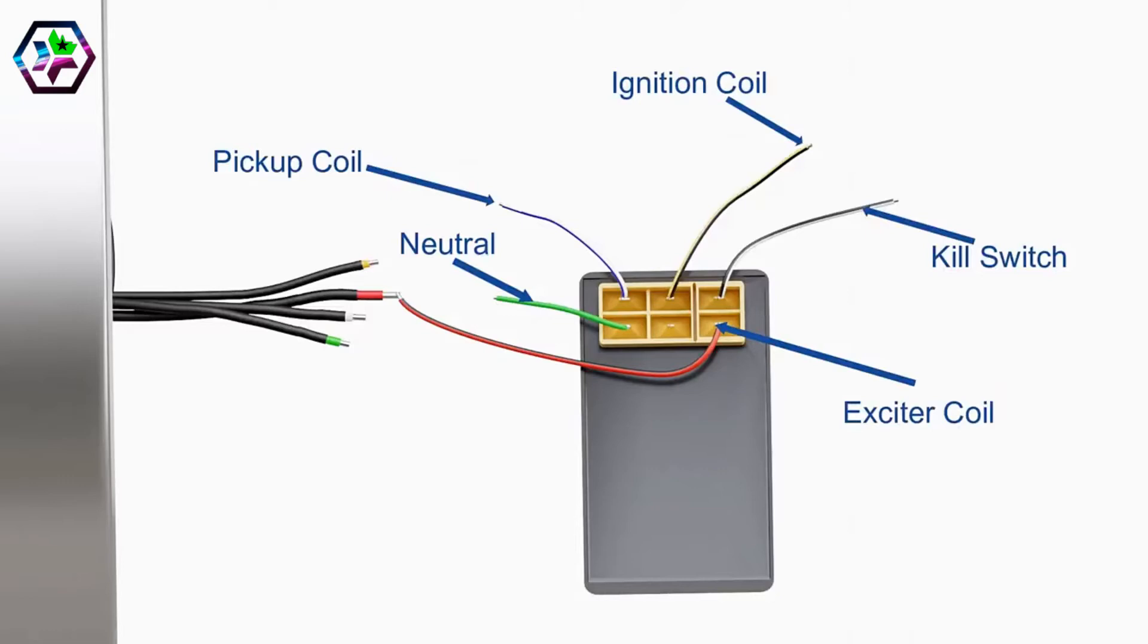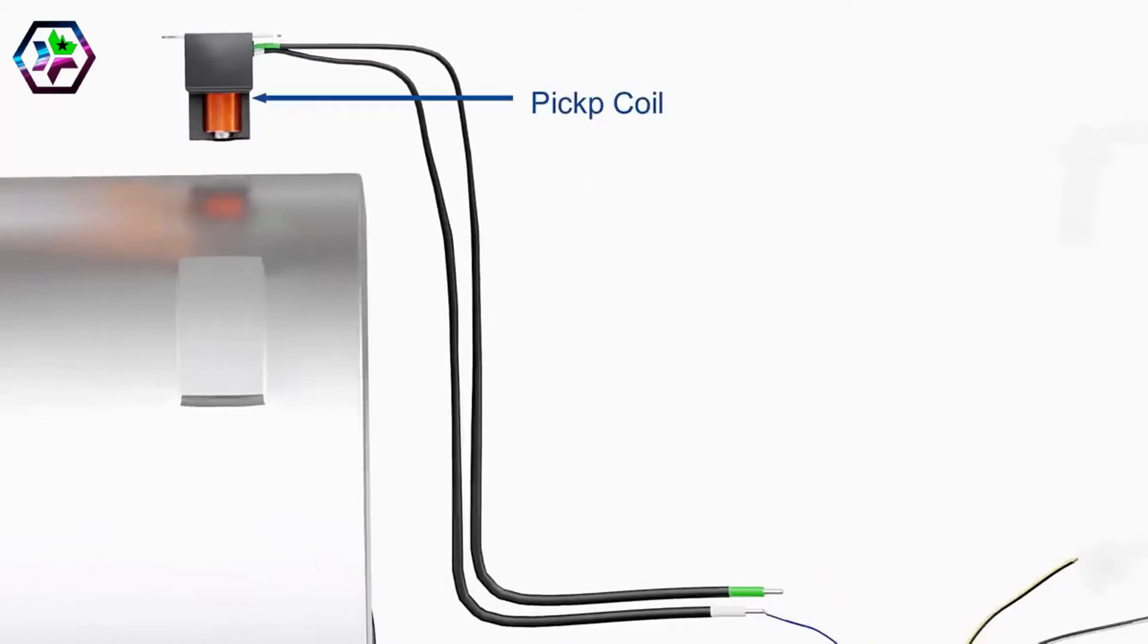A capacitor inside the CDI unit stores the electric charge. Another component, known as a pickup coil, tells the CDI unit when to dump this charge. The pickup coil has a small magnet with a coil of wire around it.